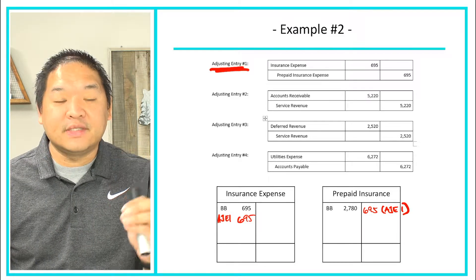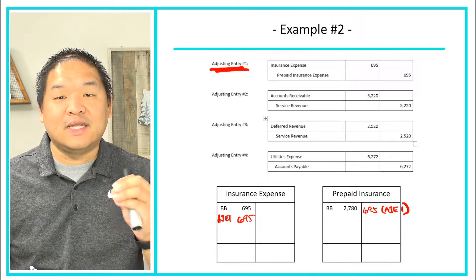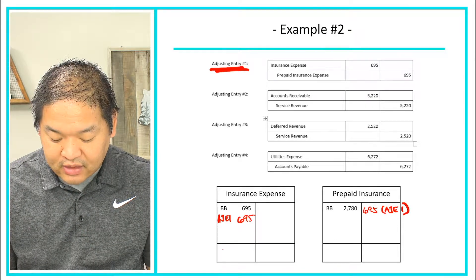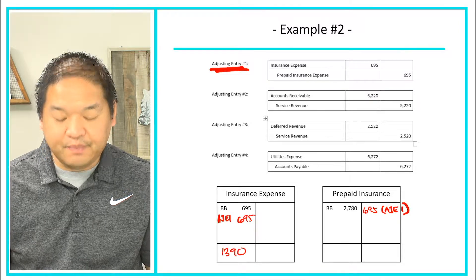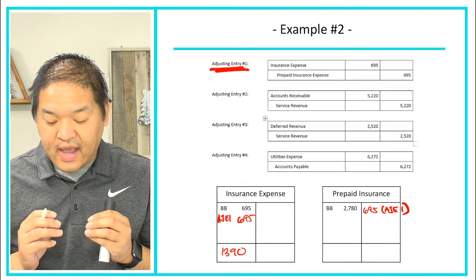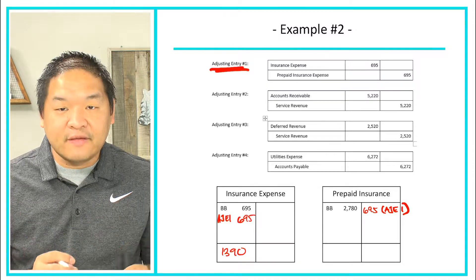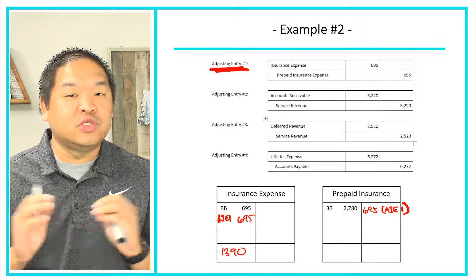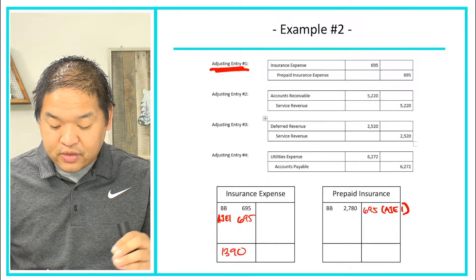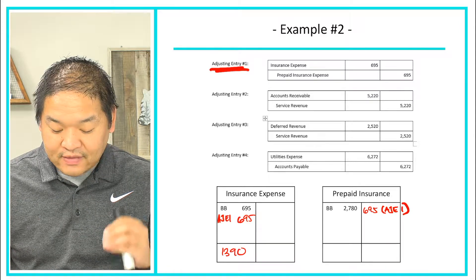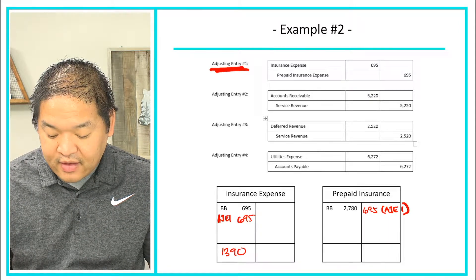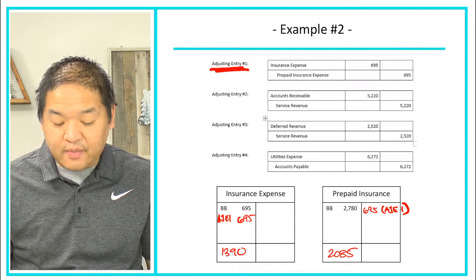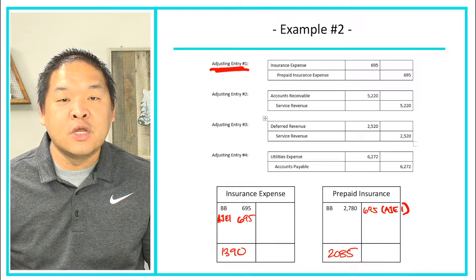$695 plus $695 gives us $1,390. $1,390 minus zero on the credit side gives us $1,390 on the debit side for insurance expense. On the prepaid insurance, we have a bigger number on the left-hand side and a smaller number on the right-hand side. $2,780 minus $695 gives us $2,085, which goes on the left-hand side. So that's what our balances look like after the first journal entry.